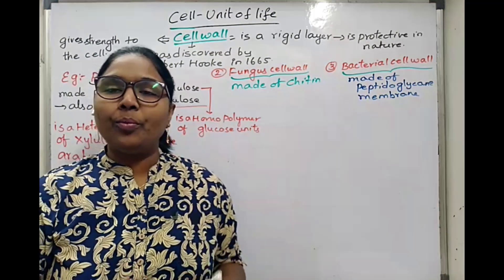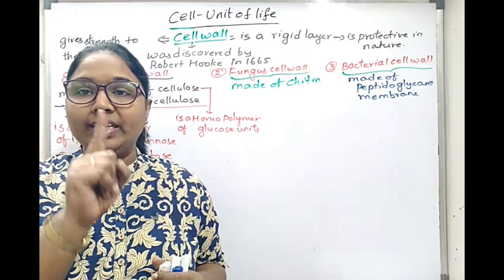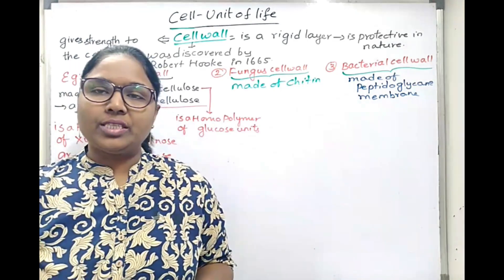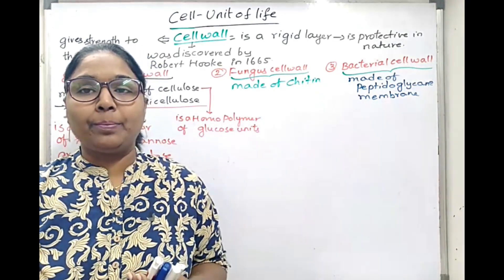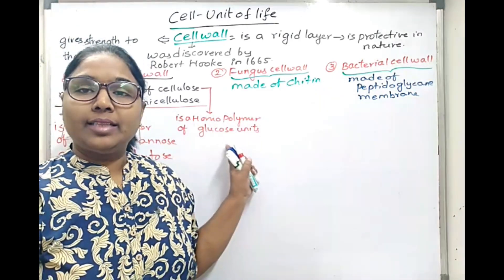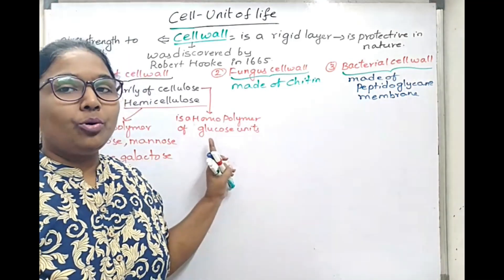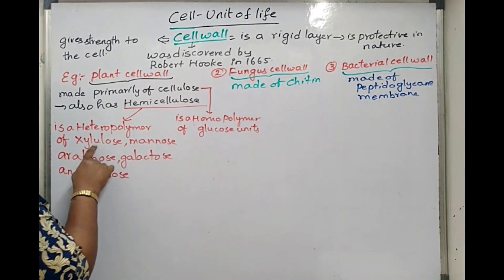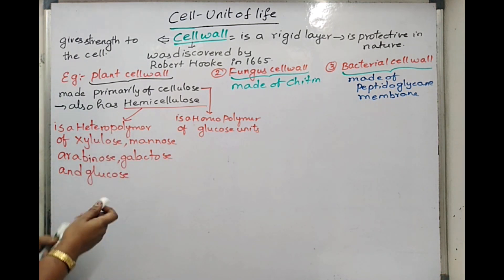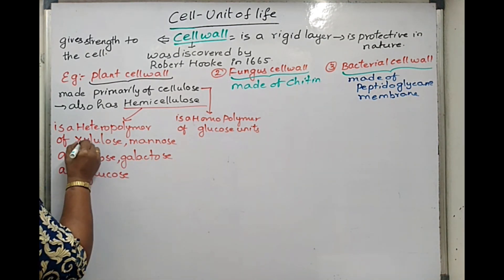What is meant by homopolymer? It means a particular compound is made up of only one type of unit forming a long chain. We use the term 'homo' because only one type of unit makes up the chain. If many different types of single units are combined into a larger structure, then that type of polymer or carbohydrate is called a heteropolymer.